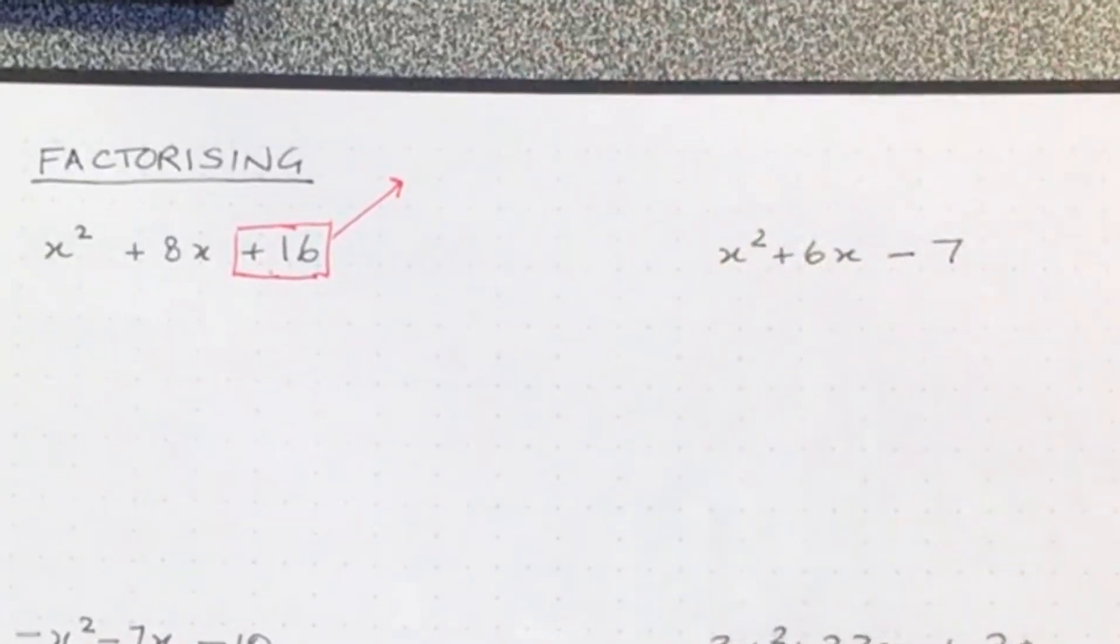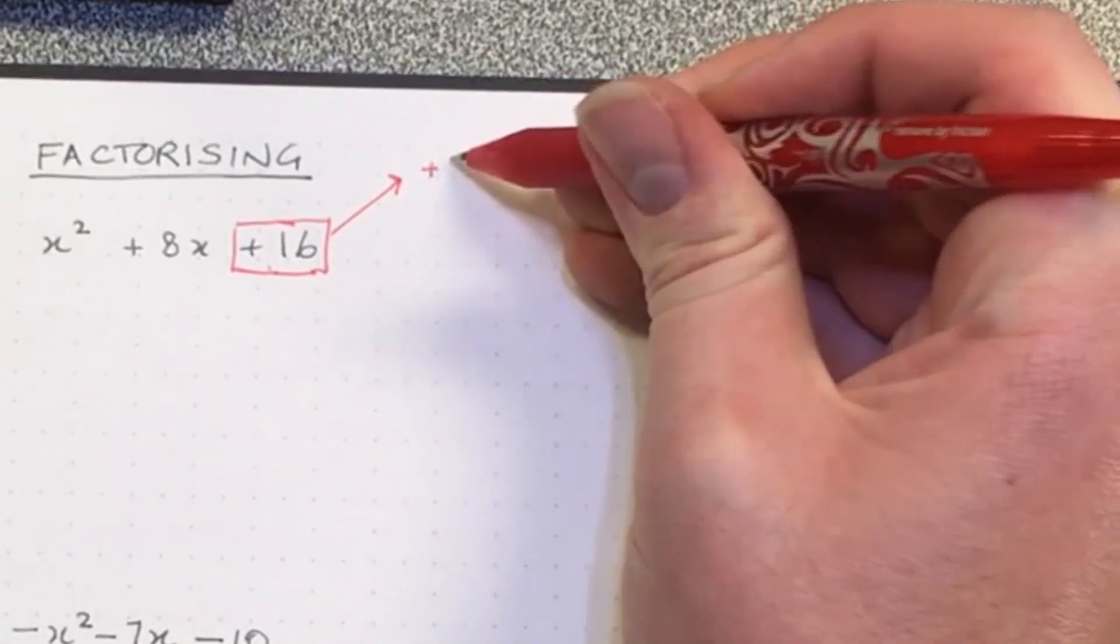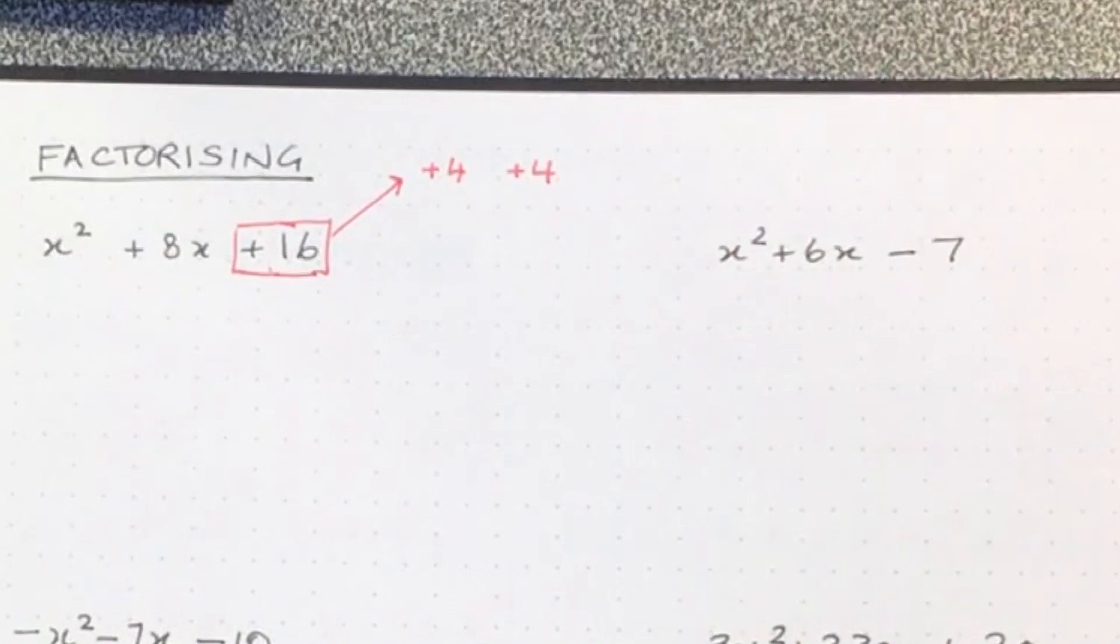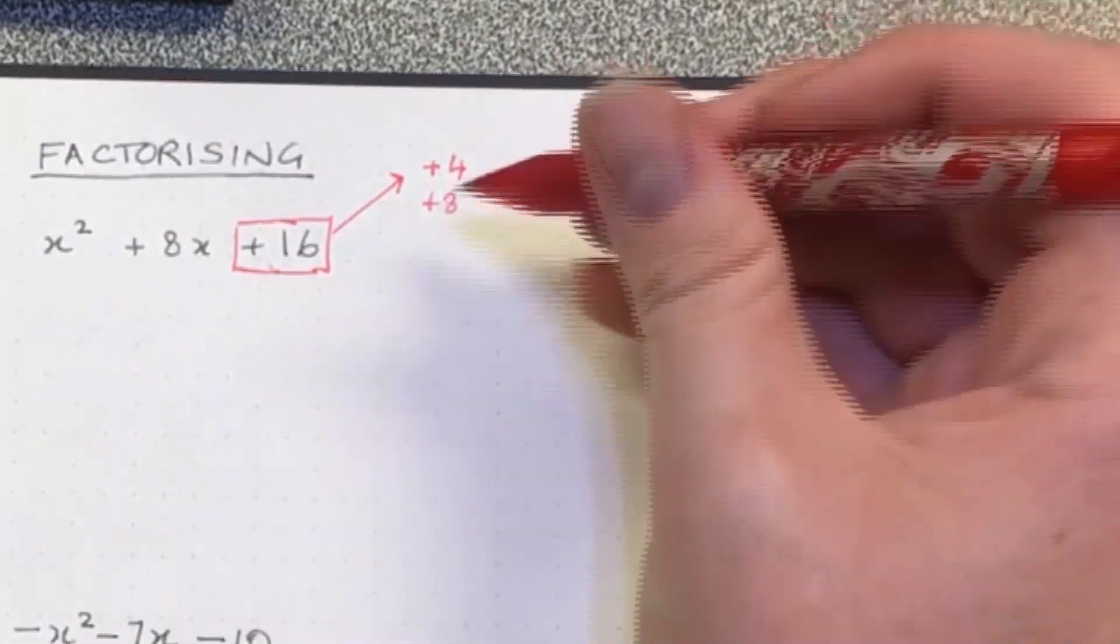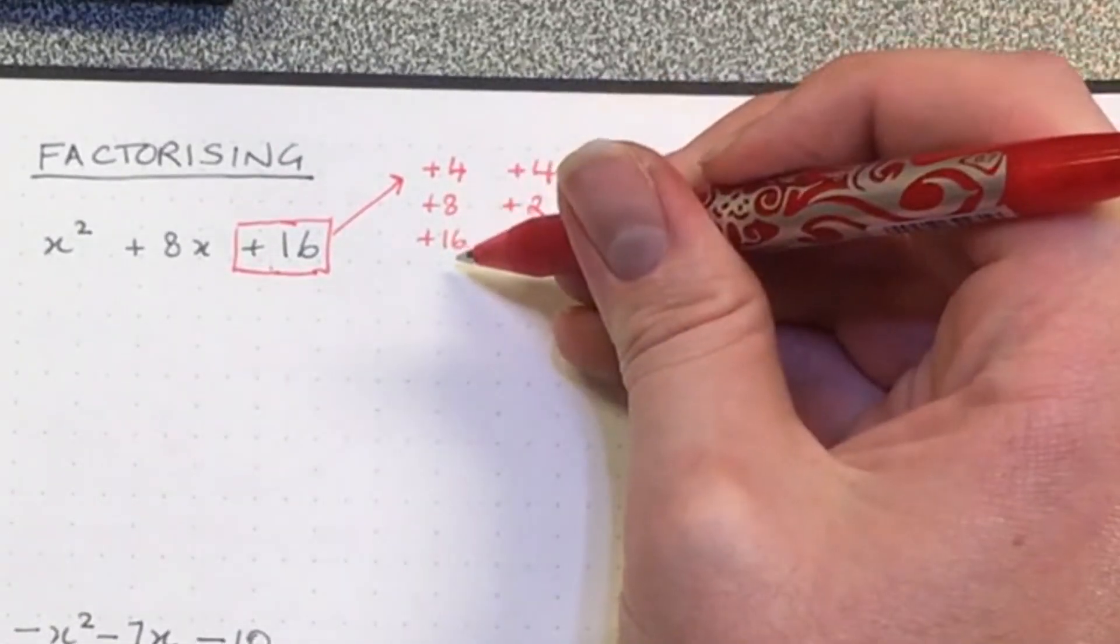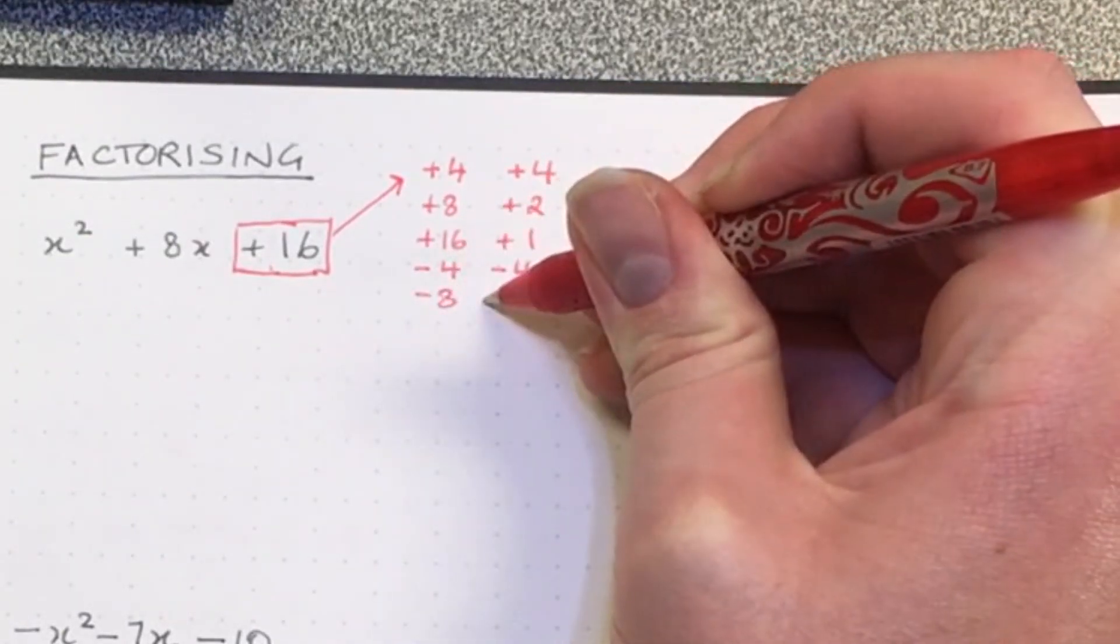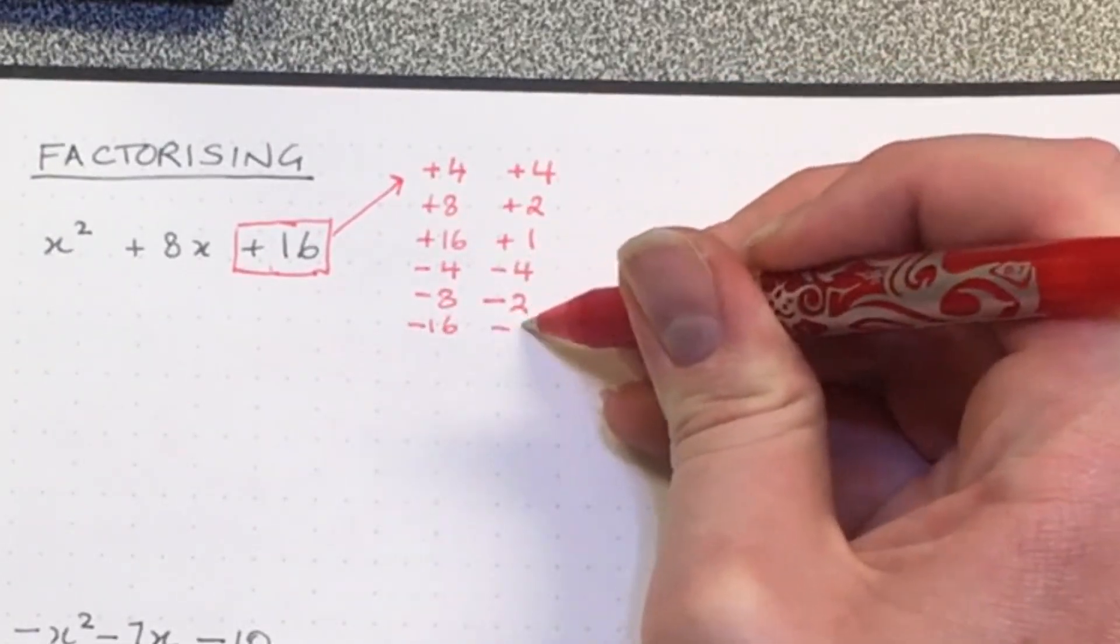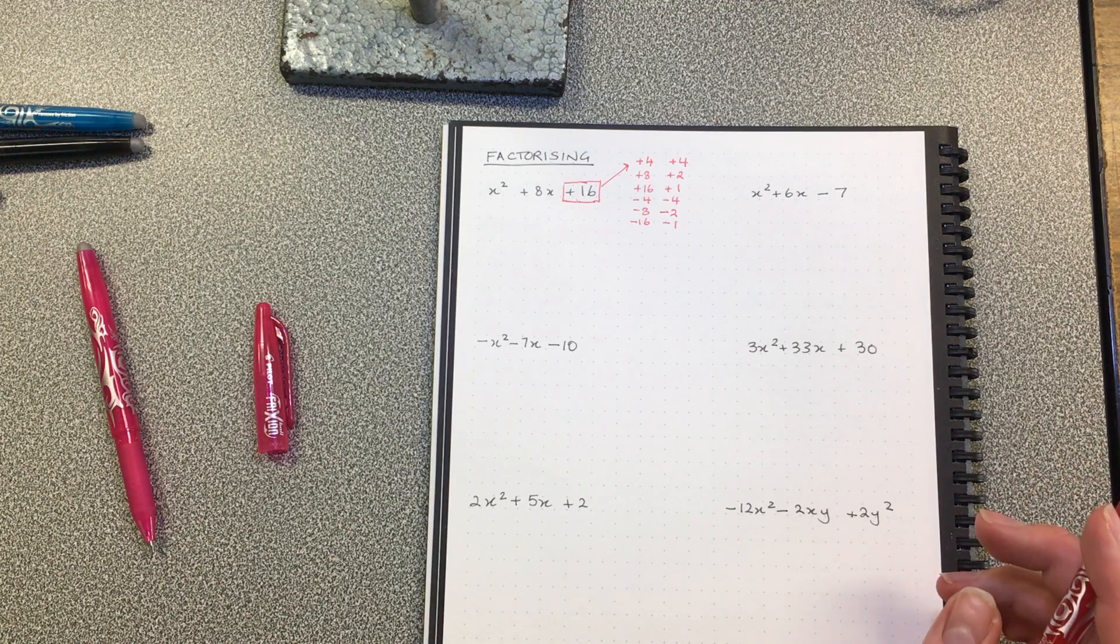So we want to find out what numbers multiply together to get positive 16. Students suggest: positive 4 and positive 4, 8 and 2, 16 and 1. And all the negative counterparts of those - negative 4 times negative 4, negative 8 times negative 2, because two negatives make a positive. That looks pretty much like all of them I need to worry about.